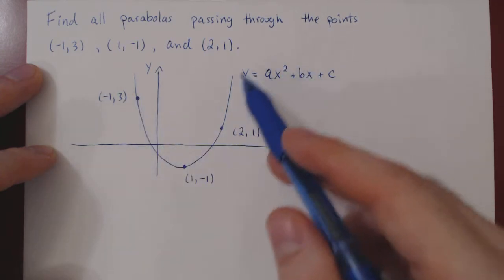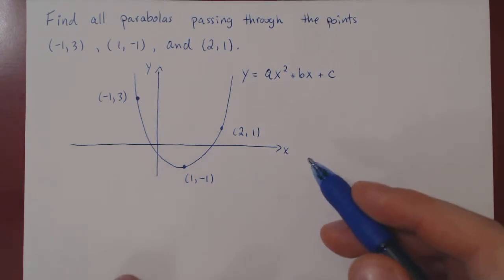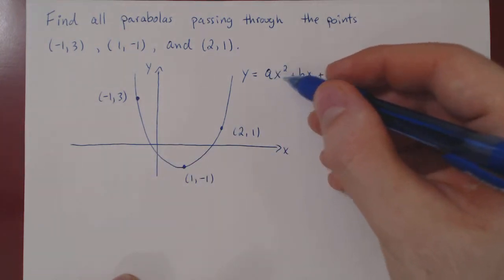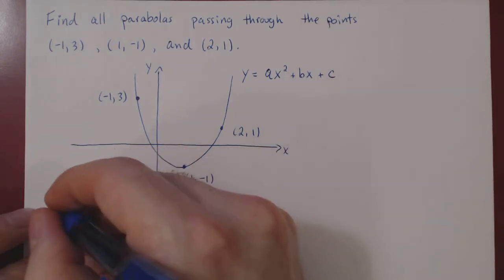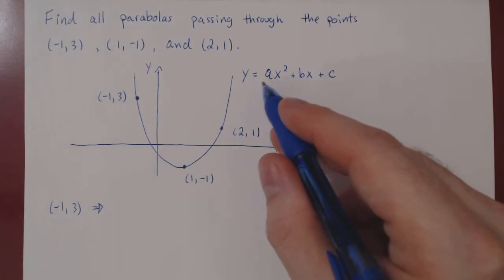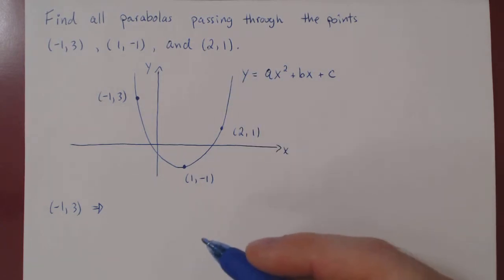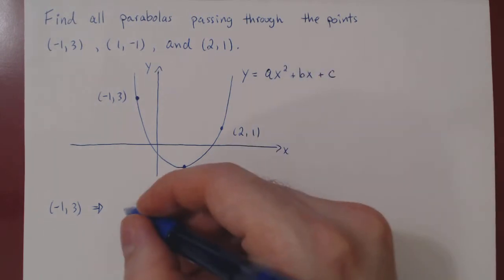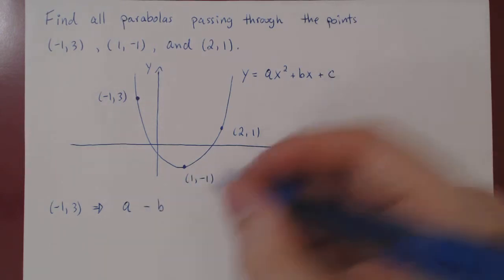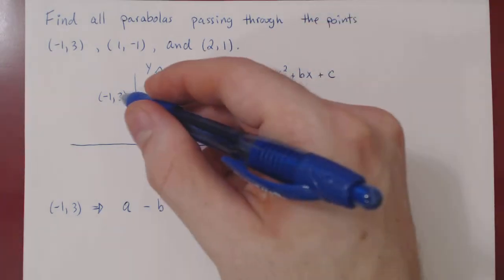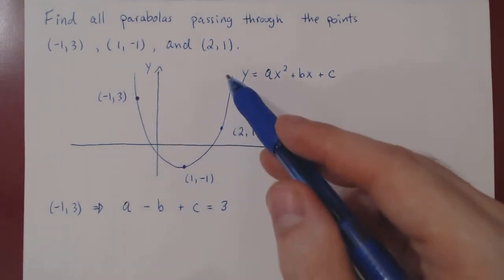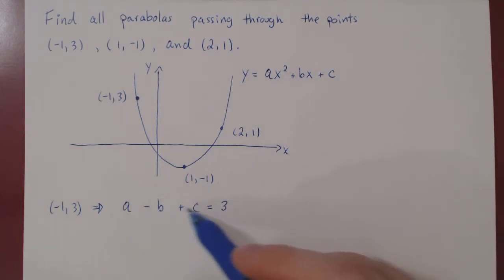So the point negative one, three must be a solution of this equation, so we can replace. Let's replace x by negative one. So we'll have a times negative one squared, which is one. This point implies that we get the following equation. So we have a times negative one squared, which is one, plus b times negative one, so minus b, plus c. That equals y, and for this point y is positive three. So you see that the fact that this point is on the equation of our parabola means that the coefficients must satisfy this linear equation.